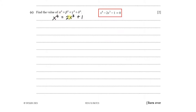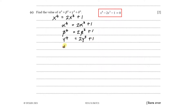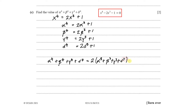Since each of alpha, beta, gamma, and delta is a root of the original equation, we can write: alpha⁴ equals 2alpha³ plus 1, beta⁴ equals 2beta³ plus 1, gamma⁴ equals 2gamma³ plus 1, and delta⁴ equals 2delta³ plus 1. Adding all four equations, the left side gives alpha⁴ plus beta⁴ plus gamma⁴ plus delta⁴, and the right side gives 2(alpha³ plus beta³ plus gamma³ plus delta³) plus 4.